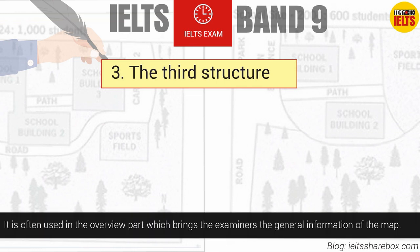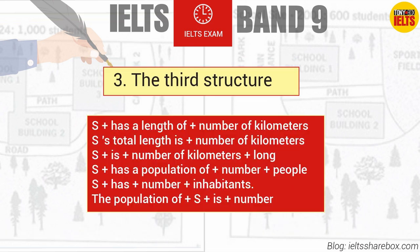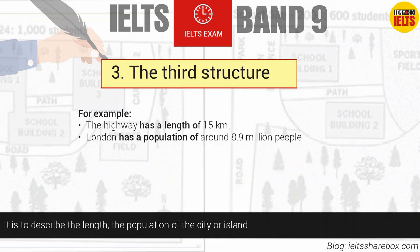The third structure is often used in the overview part, giving examiners general information about the map. It is used to describe the length or the population of a city or island. For example: 'The highway has a length of 15 km.' 'London has a population of around 8.9 million people.'